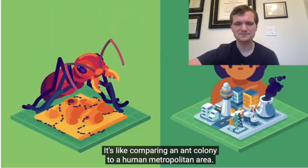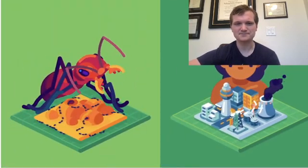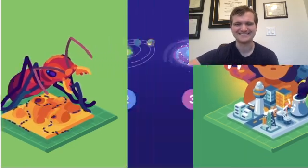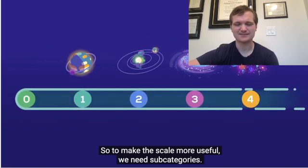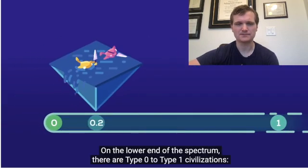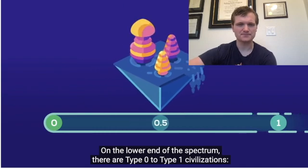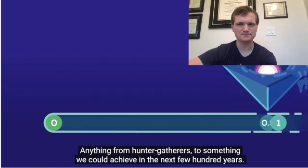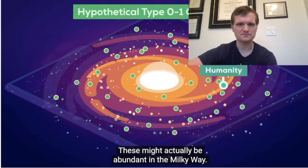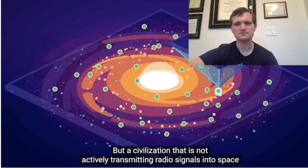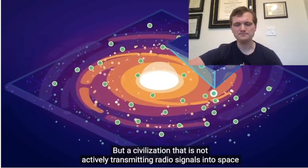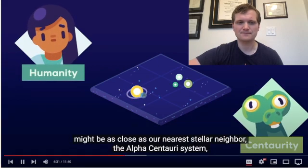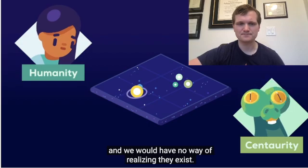These levels differ by orders of magnitude — it's like comparing an ant colony to a human metropolitan area. To ants, we are so complex and powerful, we might as well be gods. So to make the scale more useful, we need subcategories. On the lower end of the spectrum, there are Type 0 to Type 1 civilizations, anything from hunter-gatherers to something we could achieve in the next few hundred years. These might actually be abundant in the Milky Way, but a civilization that is not actively transmitting radio signals into space might be as close as our nearest stellar neighbor, the Alpha Centauri system, and we would have no way of realizing they exist.